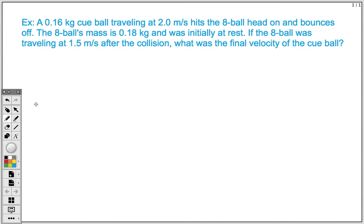So let's take a look at our problem here. We have a 0.16 kilogram cue ball that is traveling at 2 meters per second, hits the 8 ball head on and bounces off. The 8 ball's mass is 0.18 kilograms and was initially at rest. If the 8 ball was traveling at 1.5 meters per second after the collision, what was the final velocity of the cue ball?